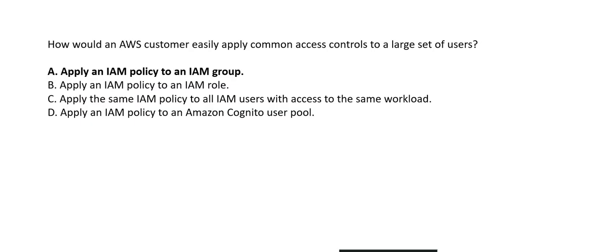Second question: how would an AWS customer easily apply common access controls to a large set of users? The answer is applying an IAM policy to a group. Applying an IAM policy to an IAM role only covers a few users assigned that role — not suitable for a large set.